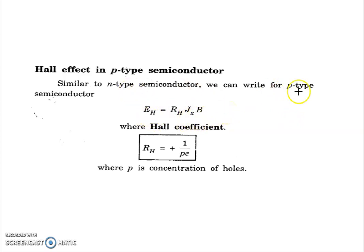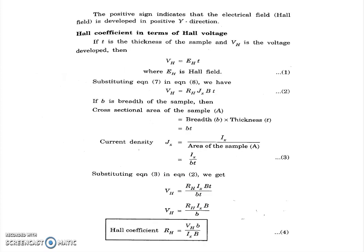For an n-type semiconductor, the Hall field EH also equals RH times JX times B. The Hall coefficient RH equals plus one divided by P for p-type, where P is the concentration of holes. The Hall coefficient can also be expressed in terms of Hall voltage.